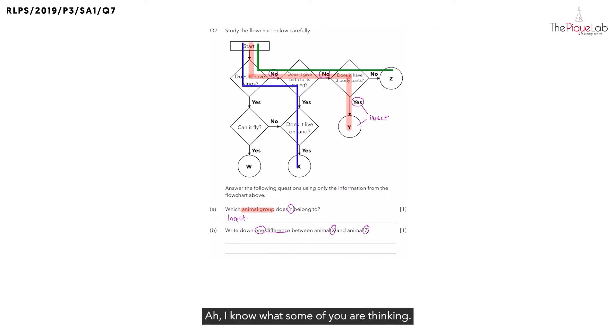Ah, I know what some of you are thinking. You would tell me that animal Z does not have three body parts while animal X has three body parts. Now is this a difference? No. If you look at the flowchart carefully, is it true that Z does not have three body parts? Yes, that is true. But from the flowchart can we tell whether X has three body parts? The answer is no, so we cannot use this characteristic as a difference.